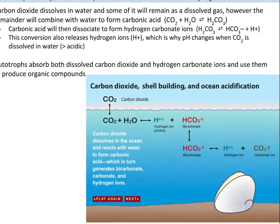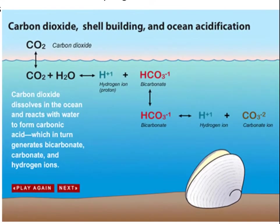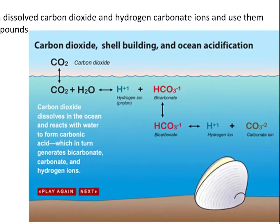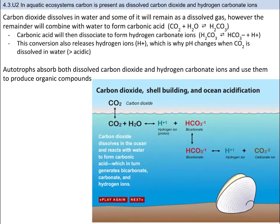Carbon dioxide dissolves in water — some remains as a dissolved gas, but the remainder combines with water to form carbonic acid (CO2 + H2O → H2CO3). Carbonic acid then dissociates to form hydrogen carbonate ions, releasing hydrogen ions, which is why pH changes when CO2 is dissolved in water — it becomes more acidic. The more CO2 dissolved, the more acidic a body of water will be. The hydrosphere is therefore a very large sink for carbon.